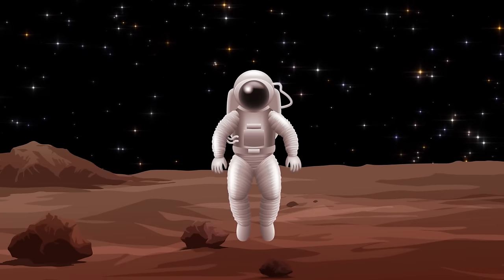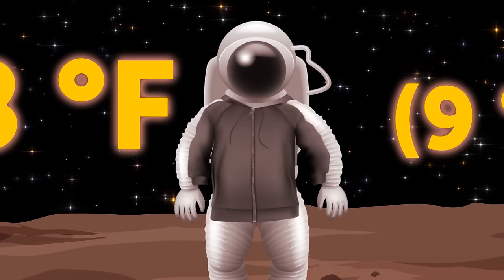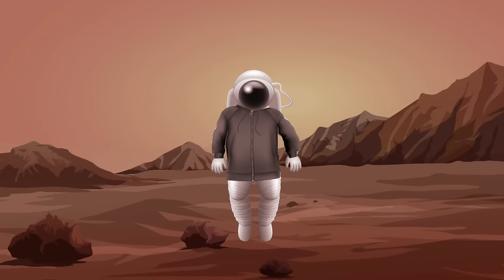We're so far from home that even light needs more than four years to travel this distance. If we used a traditional rocket, the trip would take us 73,000 years. The reason we wanted to get here was because of an Earth-like planet called Proxima Centauri b.